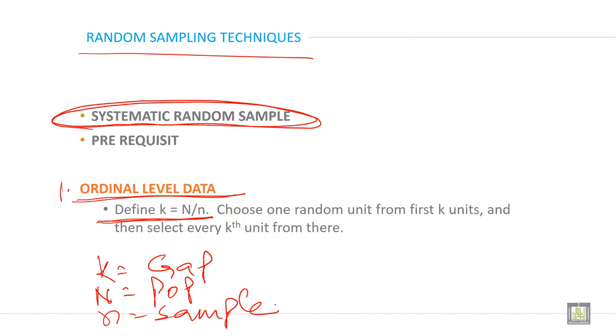What is your population size? When you divide total population by your sample, you will get the gap. So choose one random unit from first K units and then select every Kth unit from there.